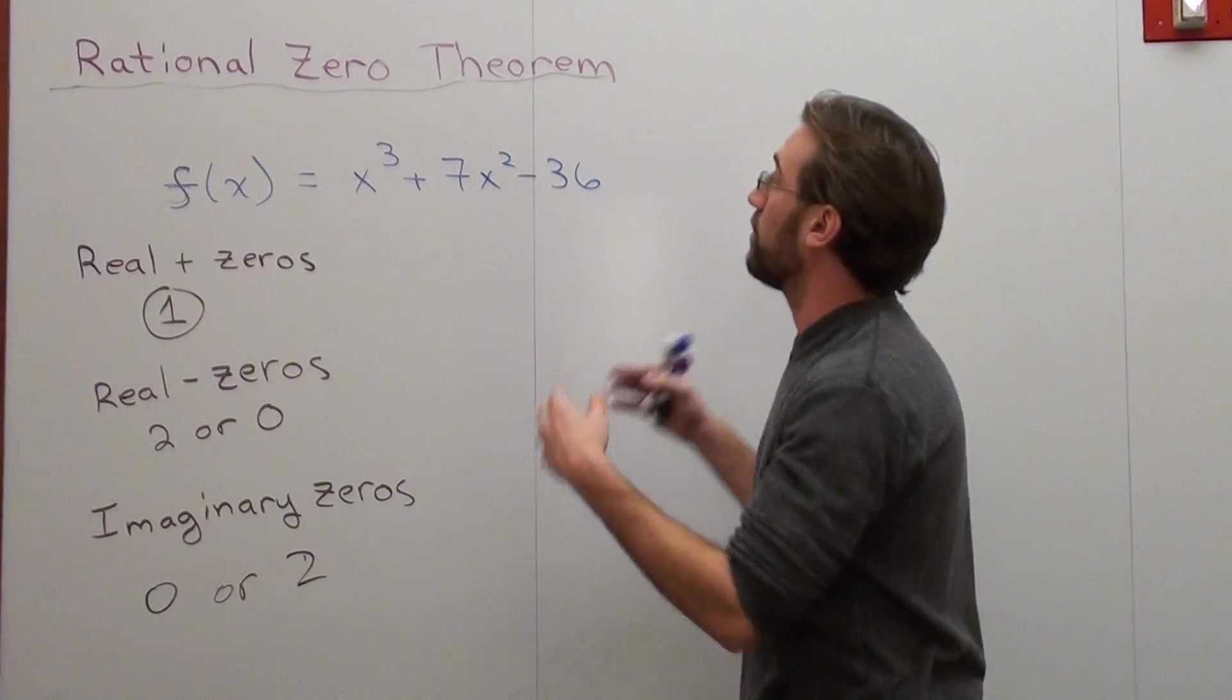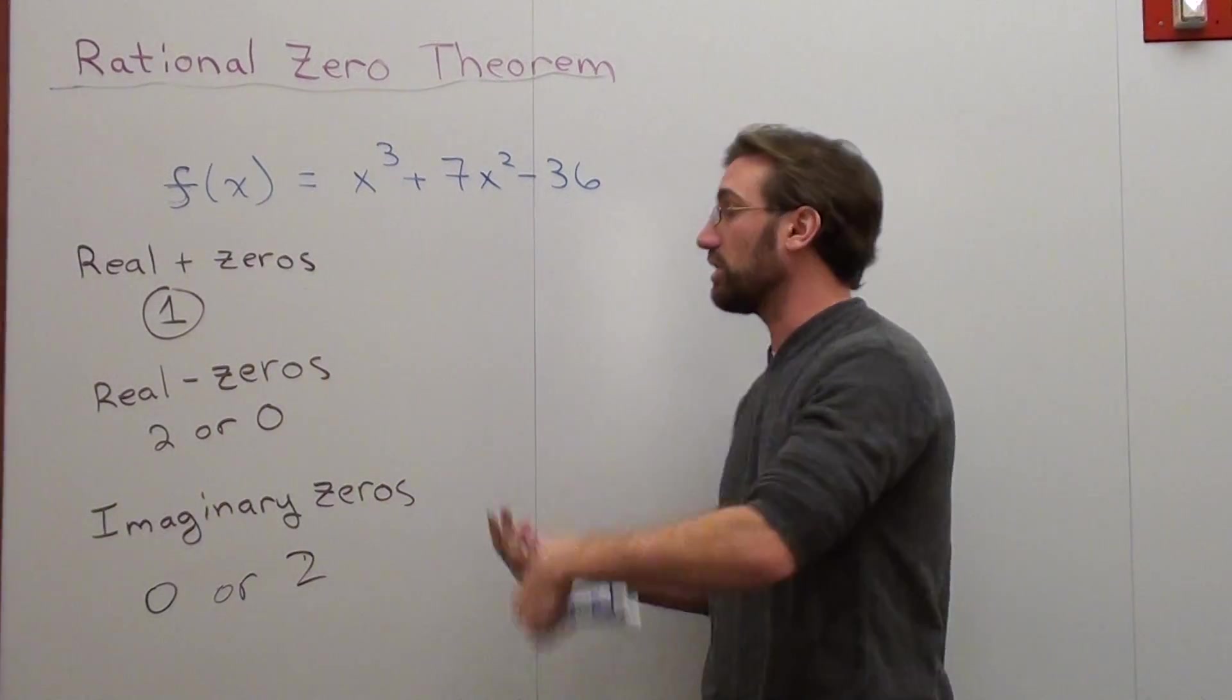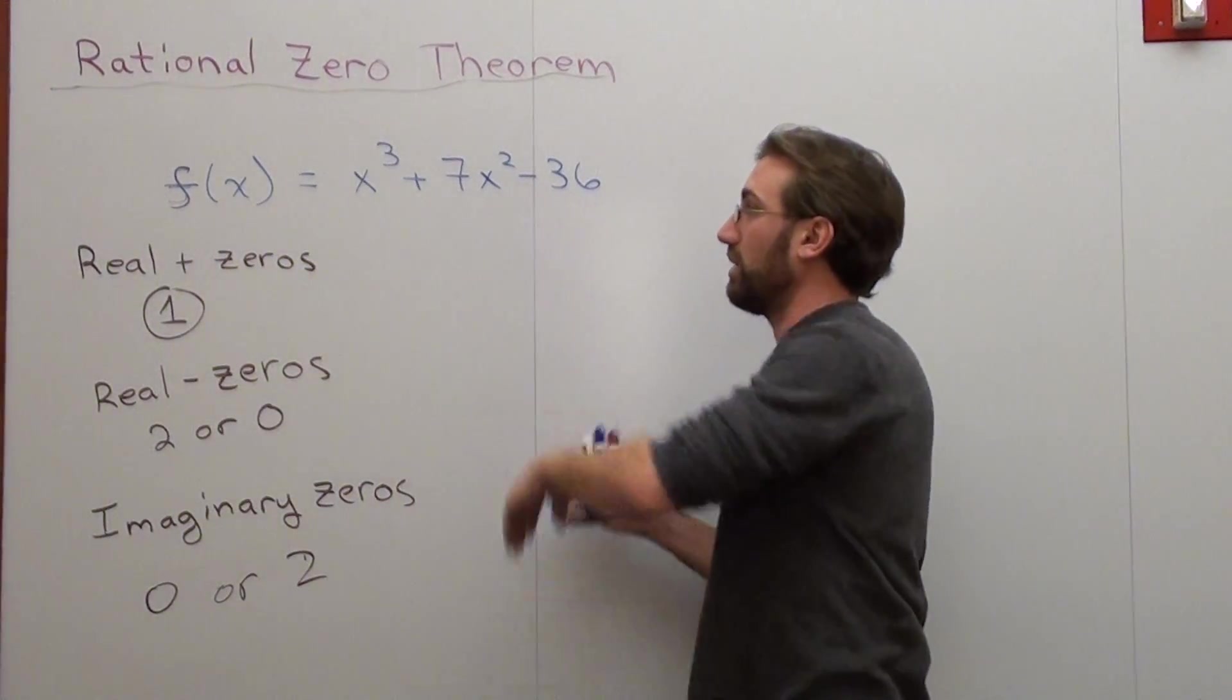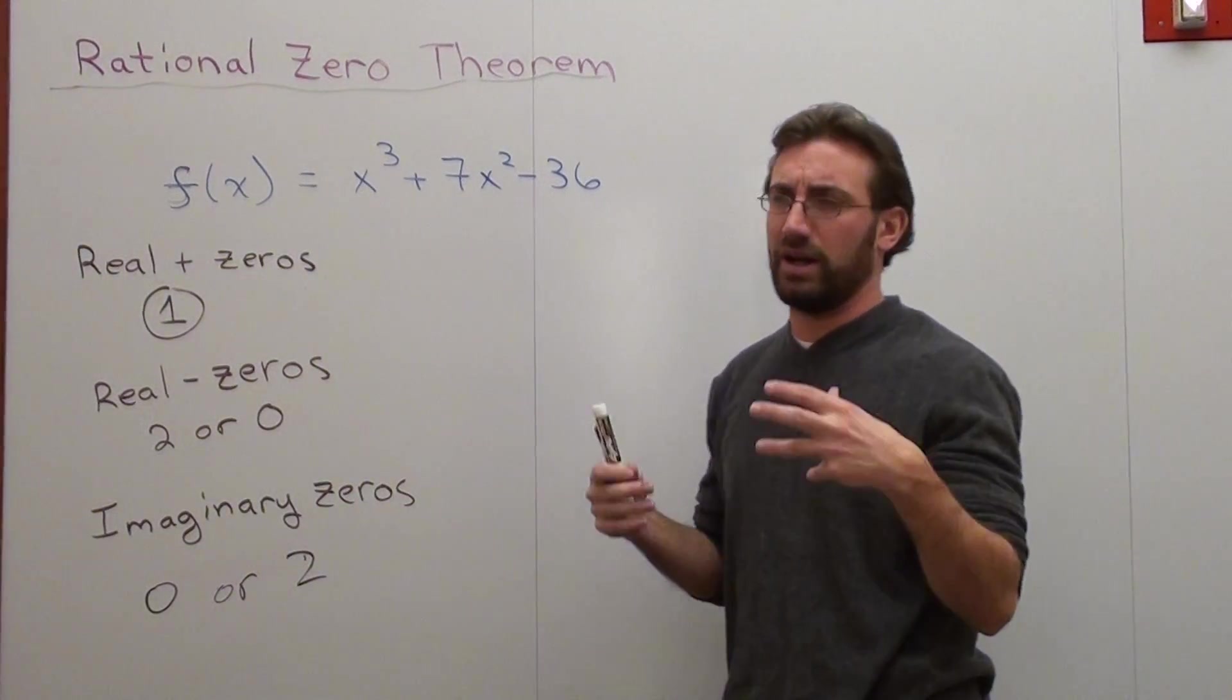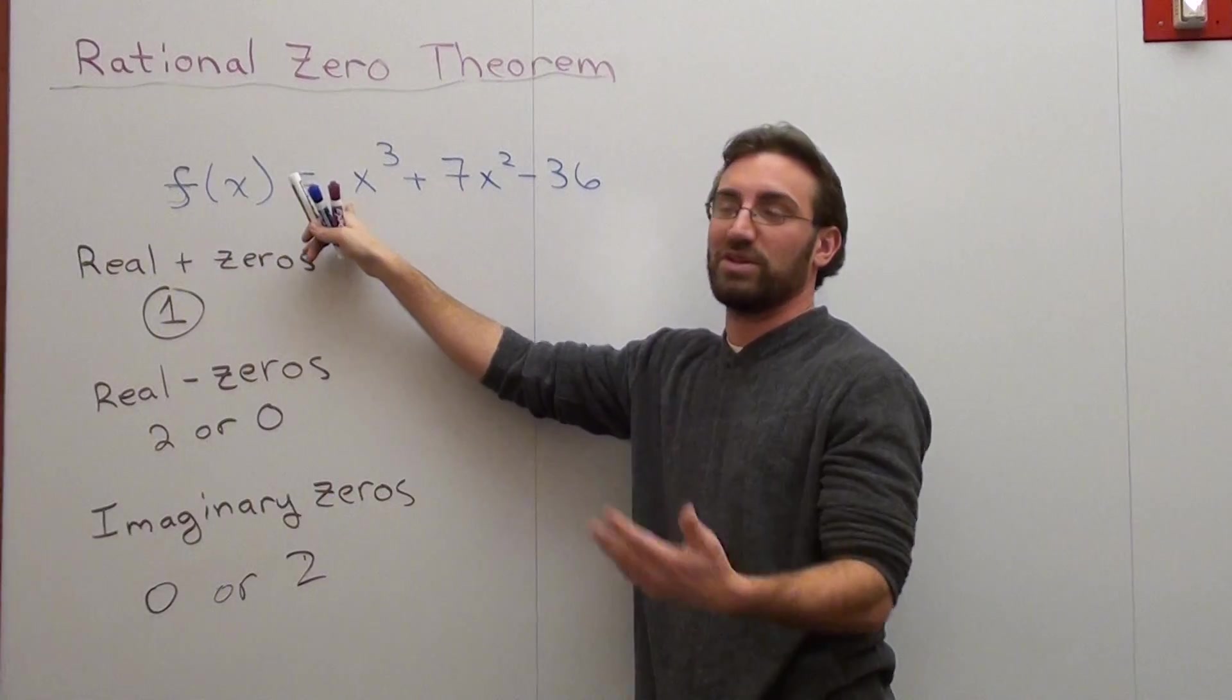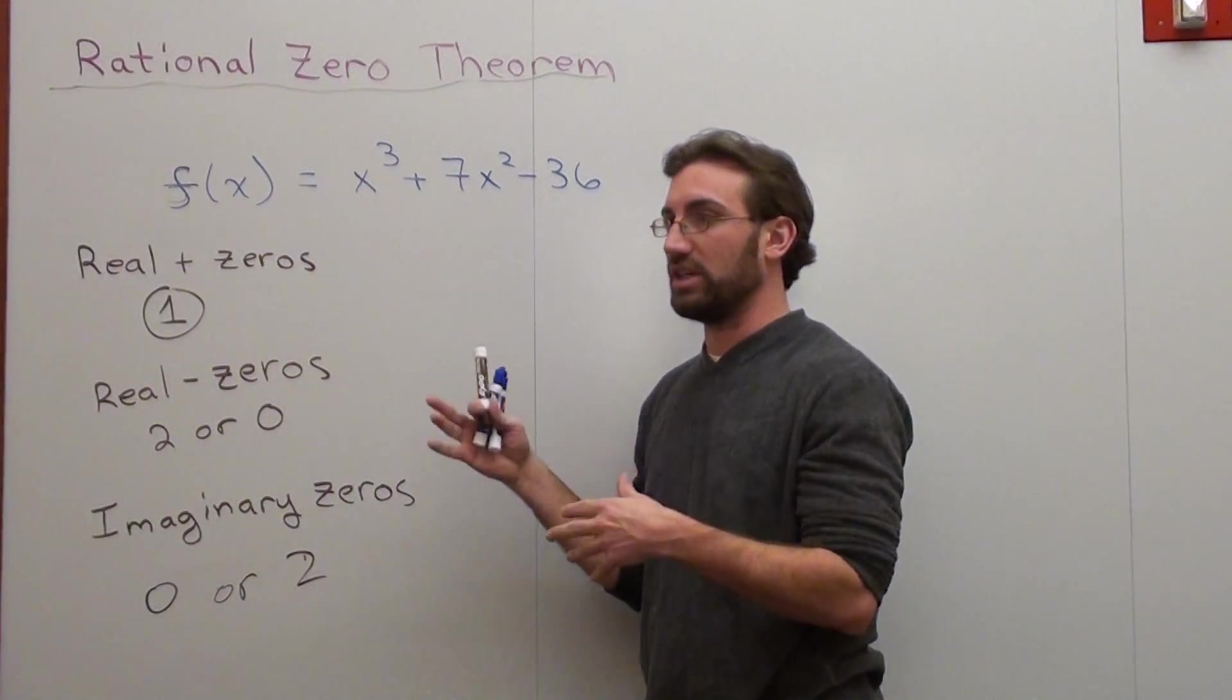Basically, the Cliff Notes version of the Rational Zero Theorem is that you write this in descending order, from highest degree to lowest degree. And what you do is you take the constant of the last term and you divide it by the coefficient of the first term. That's pretty much all there is to it. And it's very easy in this case because the number in front of x happens to be a one.